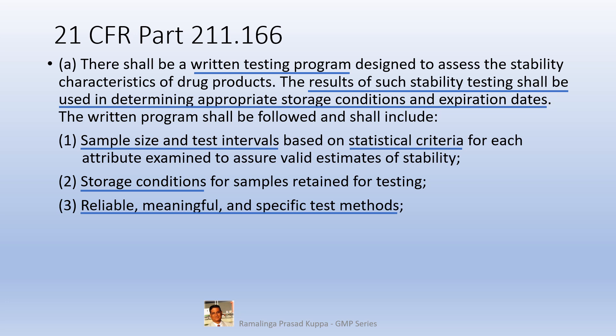Reliable, meaningful, and specific test methods — this is important. Reliable means that the method should be capable of reproducing results repeatedly and accurately. The method should also be stability-indicative, meaning that if there is any change in any parameter during the stability study, the analytical method should be capable of estimating the drug product without any ambiguity, even when similar impurities or other isomeric compounds with a closer molecular structure compared to the main API are present in the drug product. Generally, the developmental R&D team would focus on developing such analytical methods.